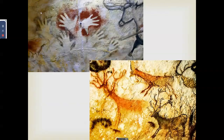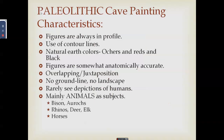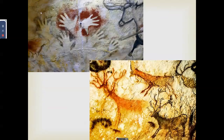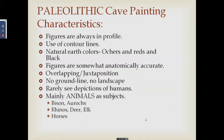Characteristics of Paleolithic cave art: figures are almost always shown in profile (side view) with contour lines only, painted in natural earth colors like ochres, reds, and blacks. Figures are anatomically accurate for the time. Compositions are mostly overlapping or in juxtaposition. There are no ground lines, no landscape, and mostly animals — bison, aurochs, rhinos, deer, elk, and horses — with very few human depictions.